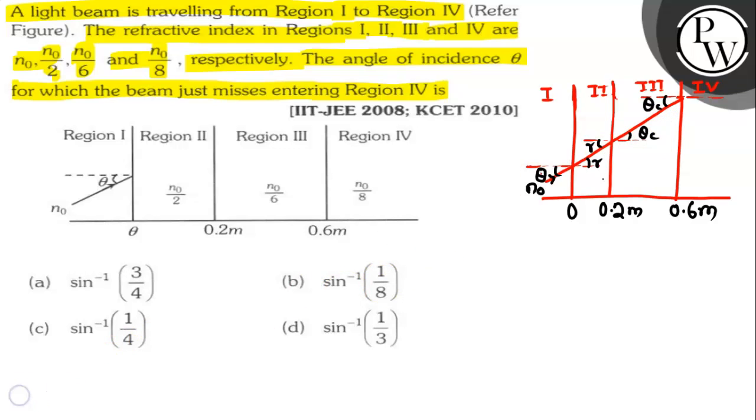So, the beam just misses entering region 4. It means it is striking at the interface at an angle of incidence which is critical angle, for the interface of region 3 and 4.